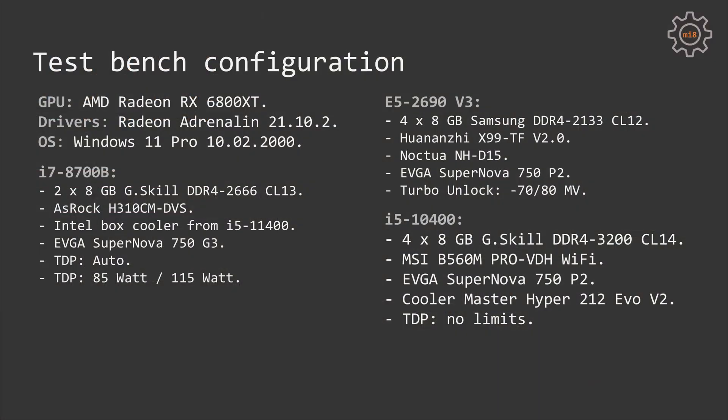The i7-8700B was tested with the following configuration: 16GB of RAM, 2 sticks of 8GB each, G.Skill DDR4-2666 CL13, the cheapest ASRock H310C MDVS motherboard, an Intel box cooler from another build using a Core i5-11400, and an EVGA Supernova 750 G3 power supply. The performance will be compared to Xeon E5-2690V3 and Core i5-10400.